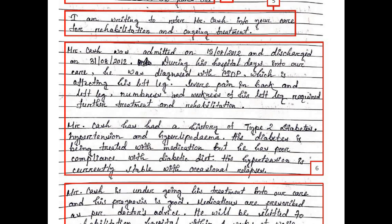The second paragraph can be organized as follows: Mr. Cash was diagnosed with chronic inflammatory demyelinating polyneuritis, which caused severe pain, weakness and numbness in his left leg. He has type 2 diabetes, hypertension and hyperlipidemia.